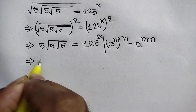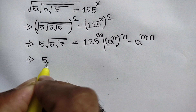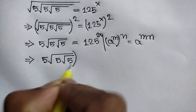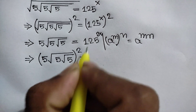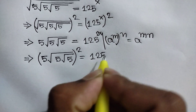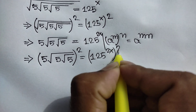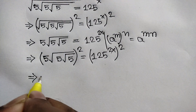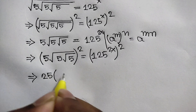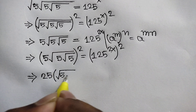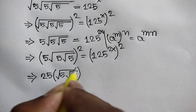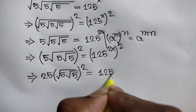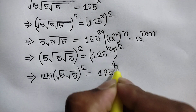Squaring both sides again, we will write: 5 times square root of 5 times square root of 5, whole to the power 2, is equal to 125 to the power 2x, whole squared. So 5 squared gives 25, and square root of 5 times square root of 5 whole squared gives 5. Applying the power rule, the right side becomes 125 to the power 4x.